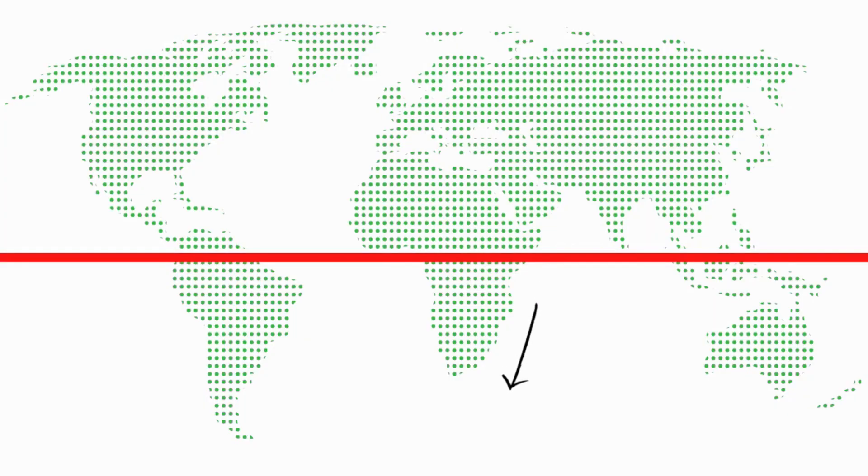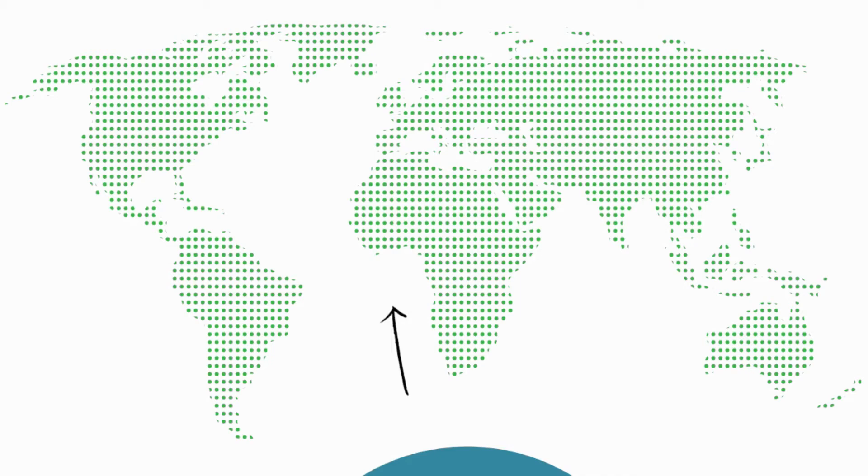Let's talk about ocean currents. Ocean currents can either originate at the equator or at the poles. Equatorial areas have higher temperatures and polar areas have lower temperatures, which means our warm ocean currents originate at the equator and our cold ocean currents originate at the poles.